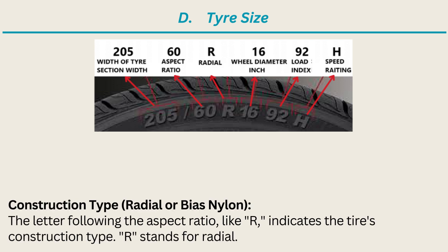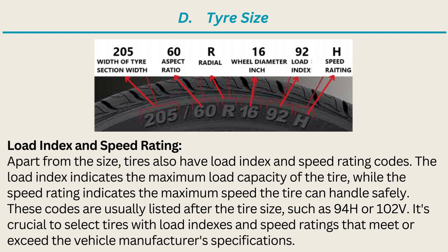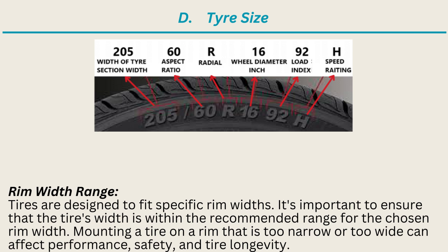The letter following the aspect ratio, like R, indicates the tire's construction type — R stands for radial, which is the most common construction type today. The final number, such as 16 or 18, denotes the diameter of the wheel rim in inches that the tire is designed to fit. Load Index and Speed Rating: apart from the size, tires also have load index and speed rating codes. The load index indicates the maximum load capacity of the tire, while the speed rating indicates the maximum speed the tire can handle safely. These codes are usually listed after the tire size, such as 94H or 102V. It's crucial to select tires with load indexes and speed ratings that meet or exceed the vehicle manufacturer's specifications. Rim Width Range: tires are designed to fit specific rim widths. It's important to ensure that the tire's width is within the recommended range for the chosen rim width. Mounting a tire on a rim that is too narrow or too wide can affect performance, safety, and tire longevity.